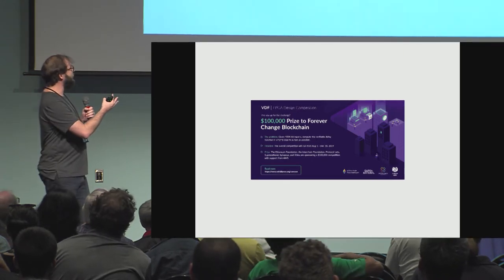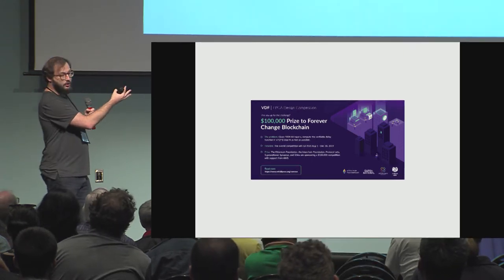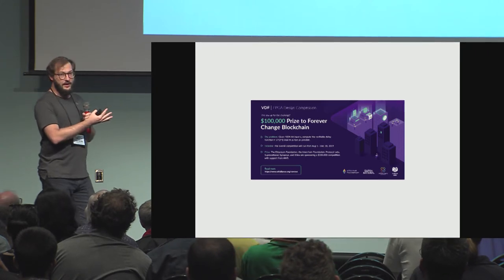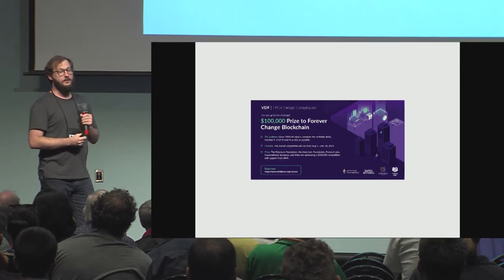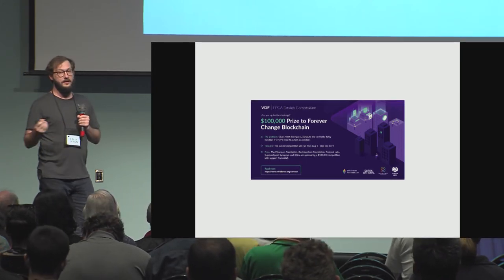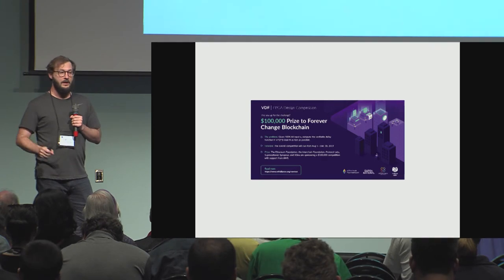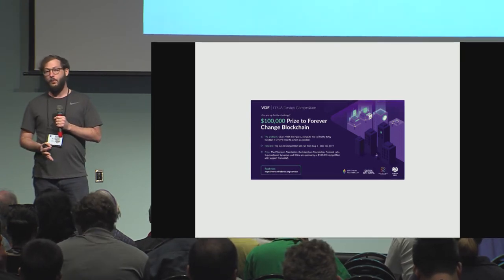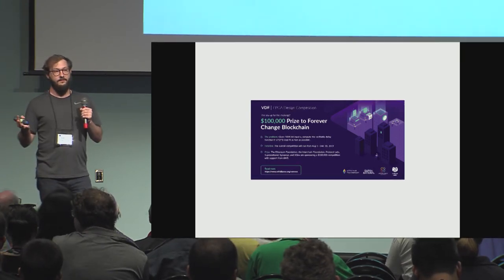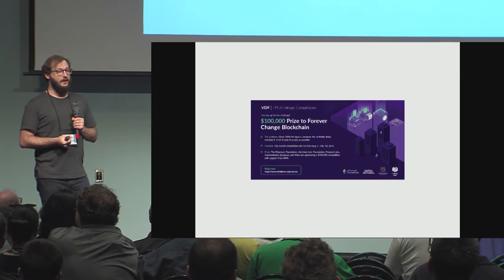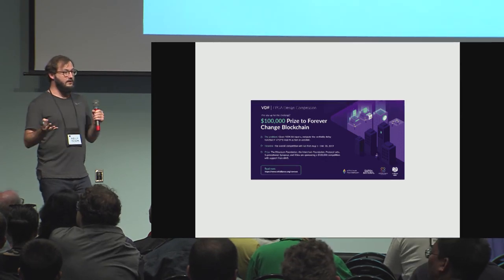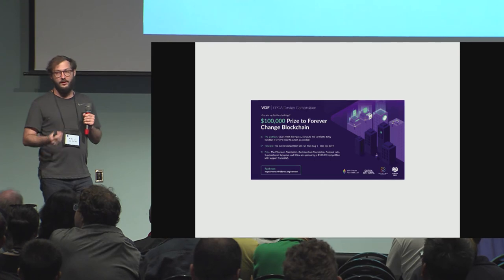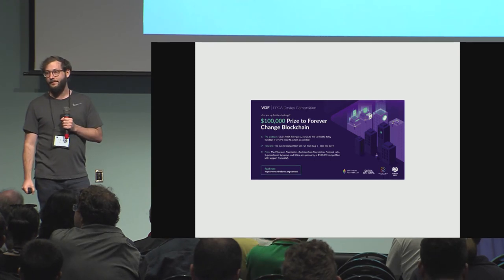we're currently running a competition in collaboration with AWS. There's $100,000 in prizes. The first round of that competition will end at the end of September, and the next round will end at the end of the year. We'd really appreciate it if the community joins in — we'd love to take a Crypto 2018 paper into production in the next year. Thank you.